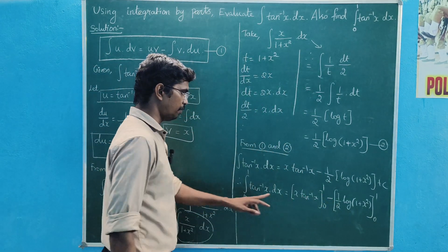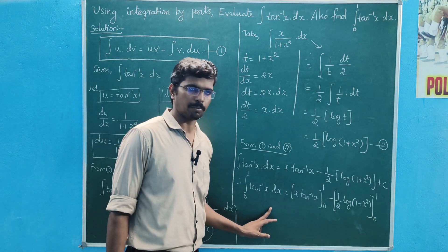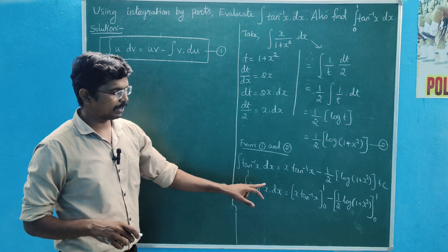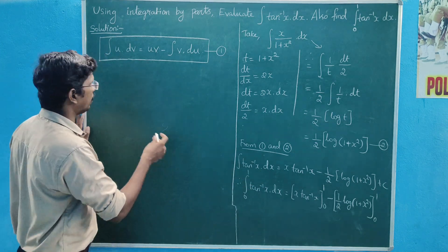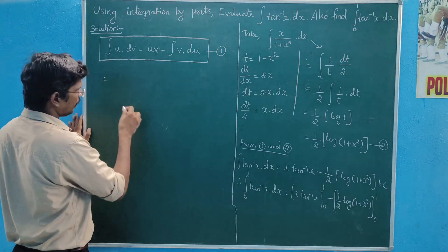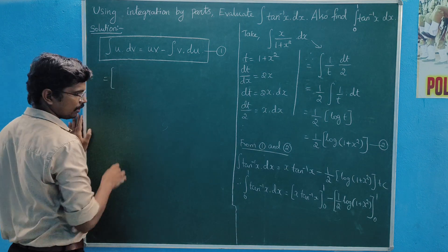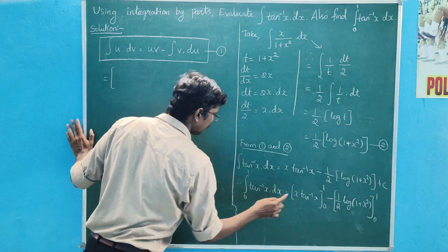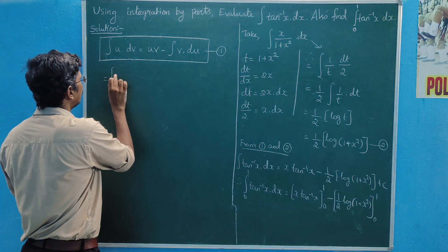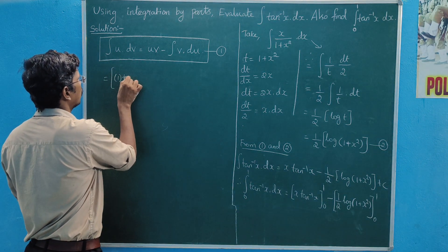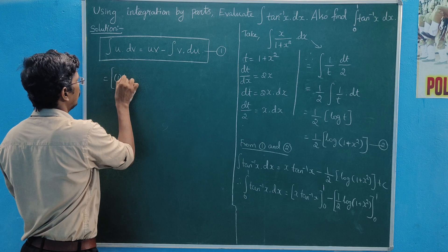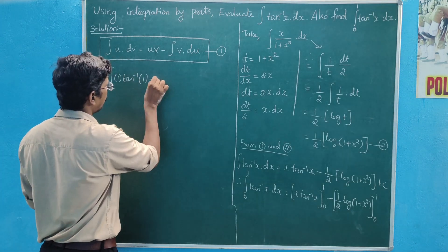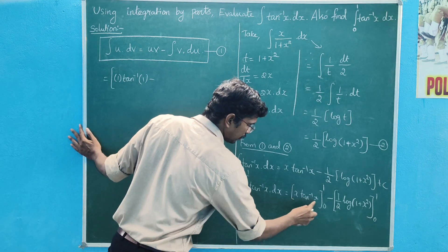Now we apply the upper and lower limits. Substituting the upper limit x equals 1, we get 1 times tan inverse of 1 minus 1 times zero.